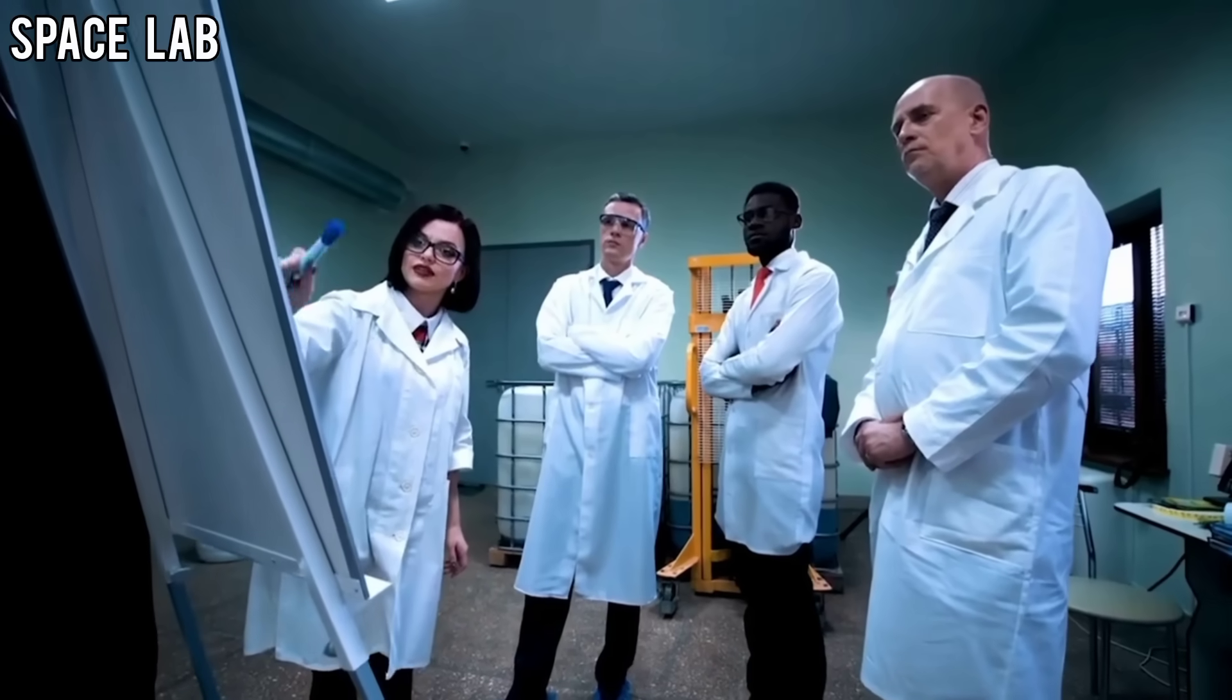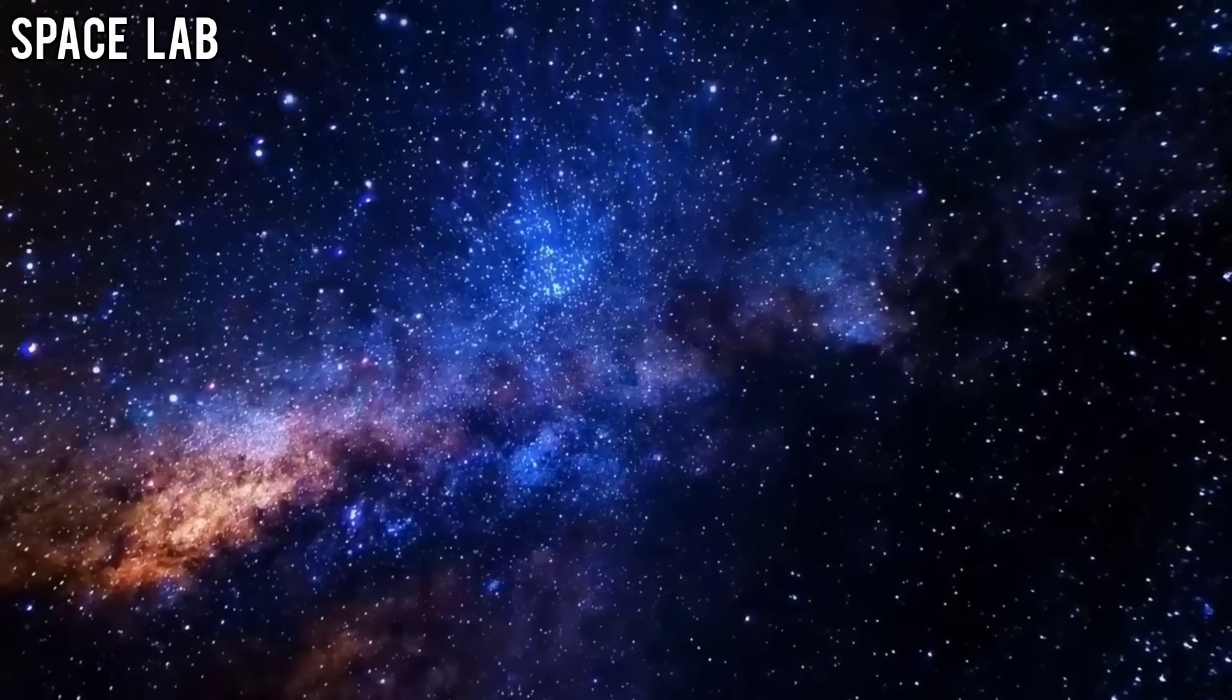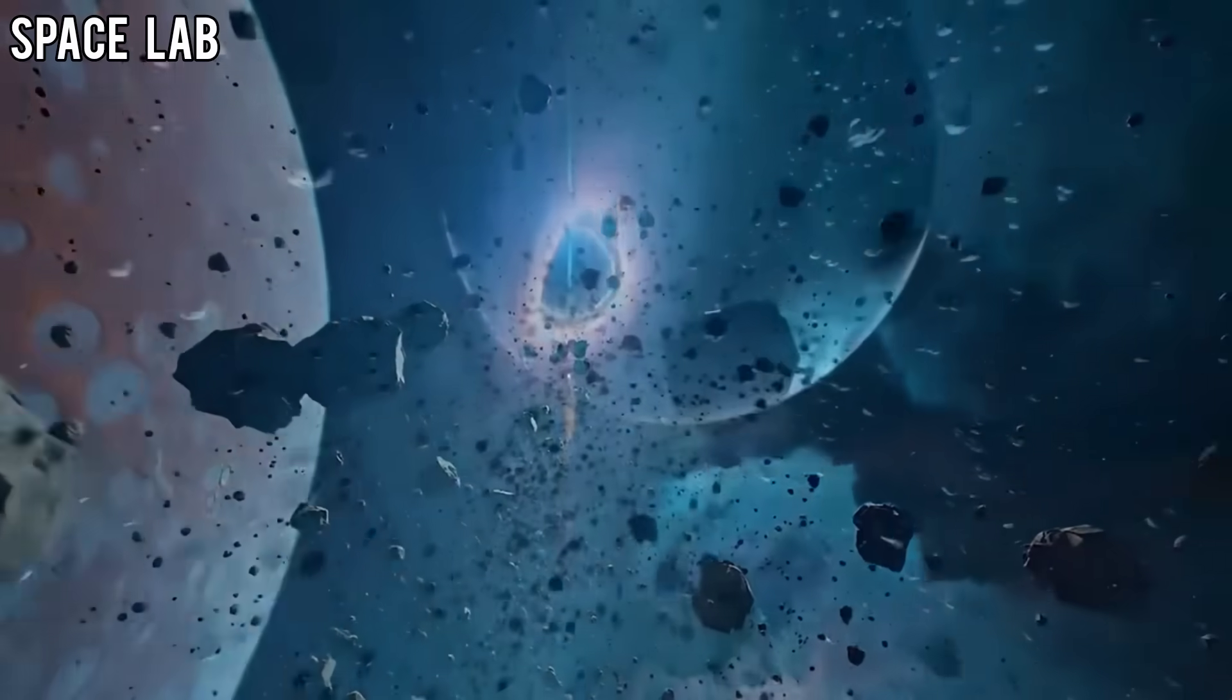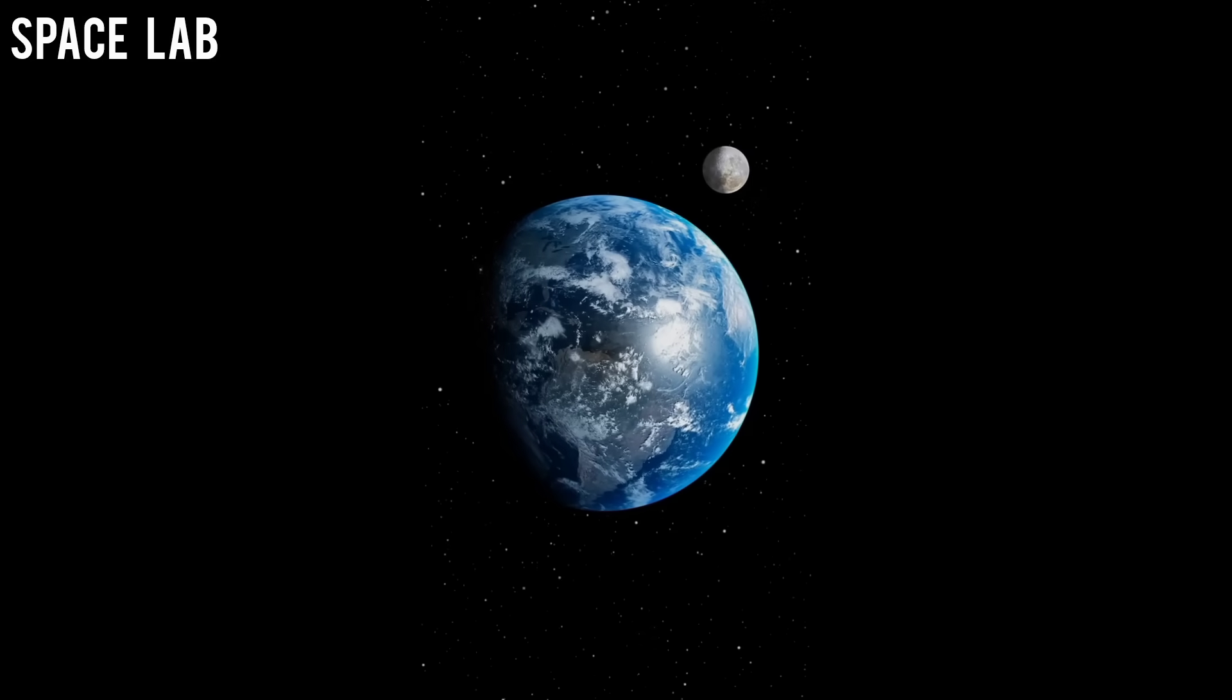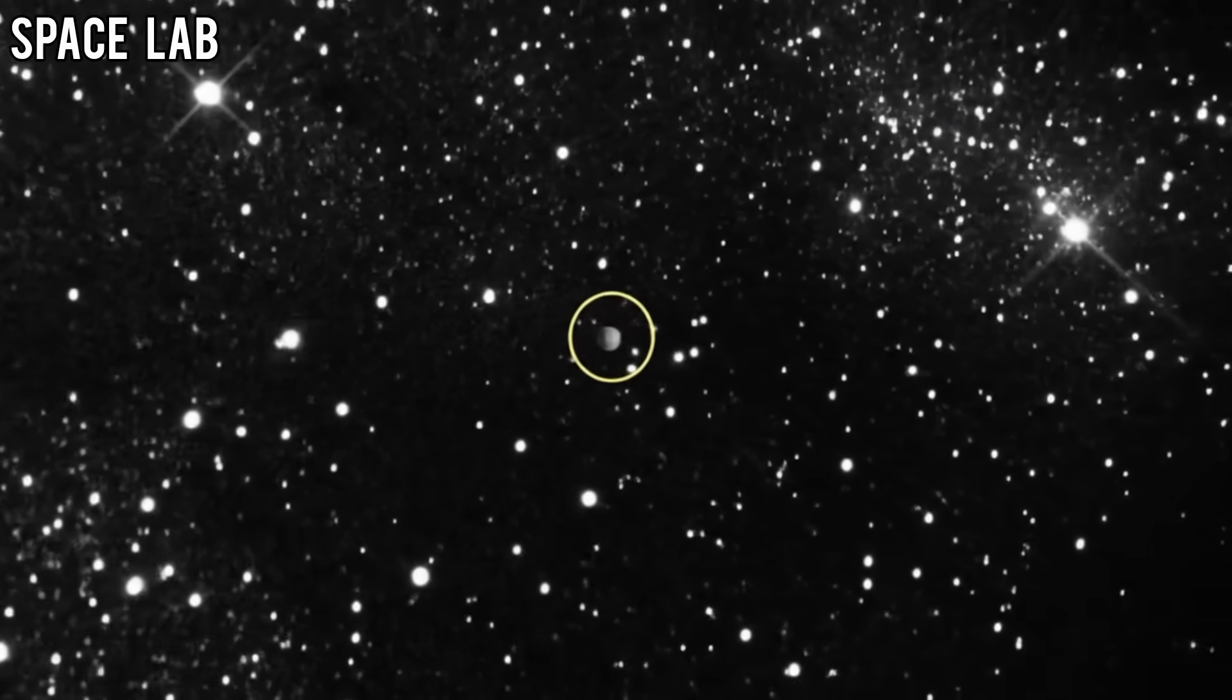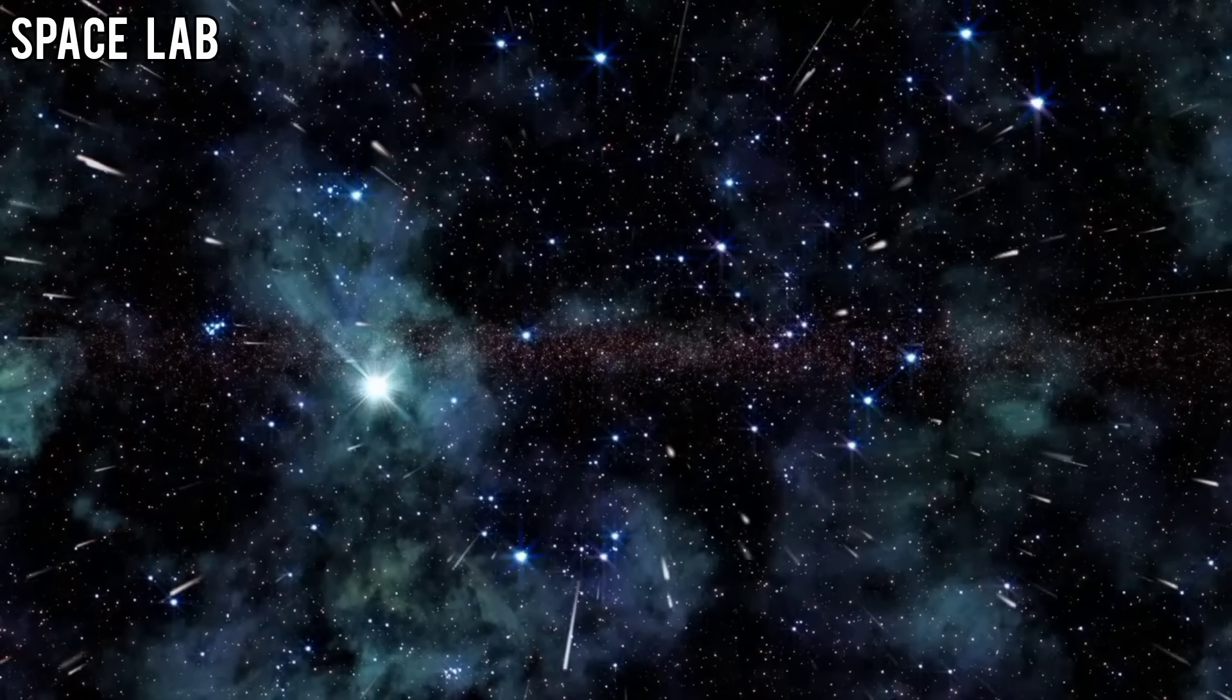The kind scientists have long theorized would be used by intelligent civilizations to communicate across the stars. But this wasn't just a test pattern. Hidden inside the signal were coded warnings, fluctuations that mapped out orbital trajectories, impact simulations, and energy levels. When plotted on a screen, the data formed a horrifying picture. Earth itself, shown alongside a series of projected collision points. It appeared that 31/ATLAS, or whatever intelligence was behind it, was sending us a message. Something dangerous was on a direct path toward Earth.